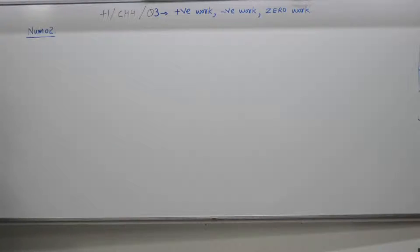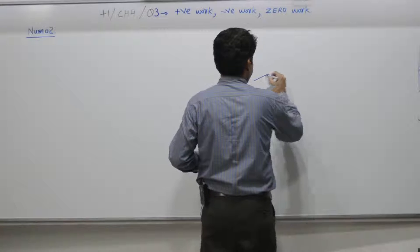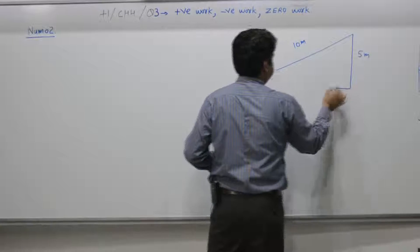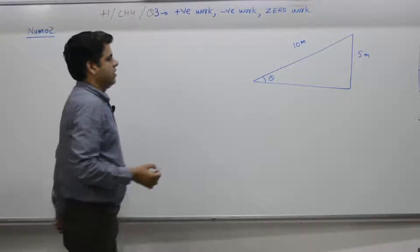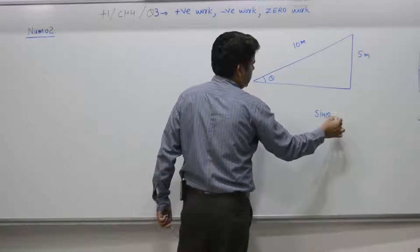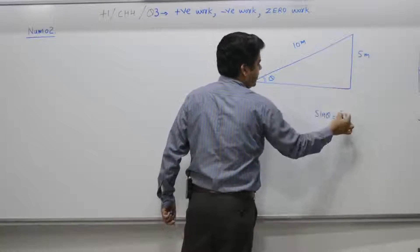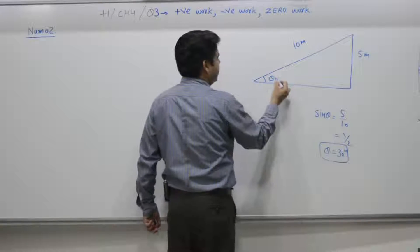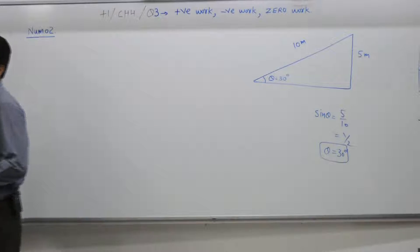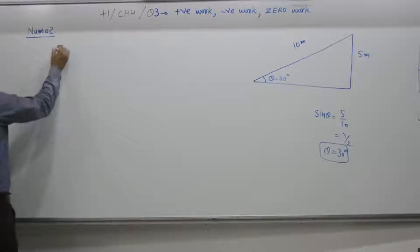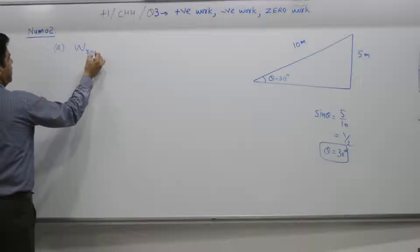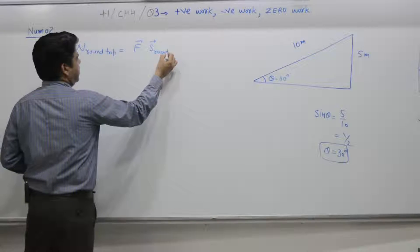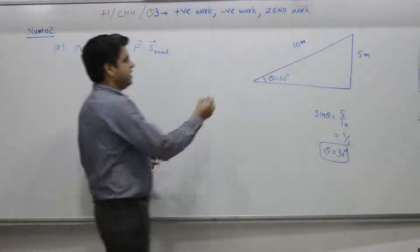The total length of the inclined plane is 10 meters and the height is 5 meters. Let this angle be theta. From the triangle, sin theta equals height divided by hypotenuse = 5/10 = 1/2, so theta equals 30 degrees. Wherever needed, I will use theta equals 30 degrees.